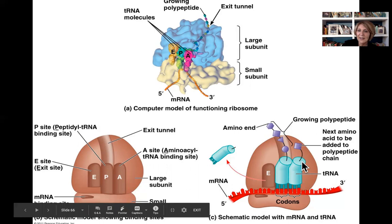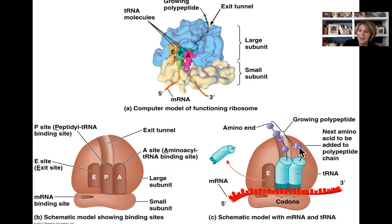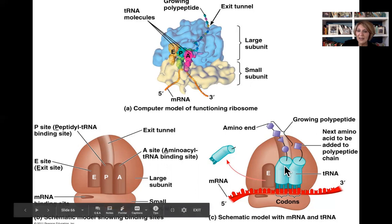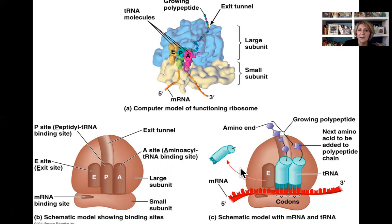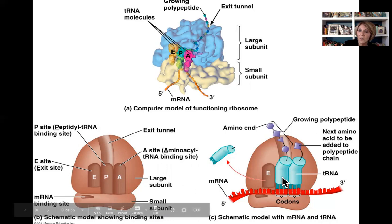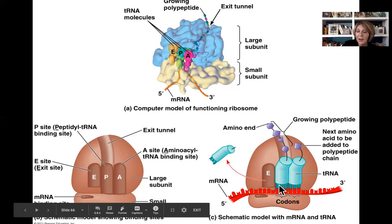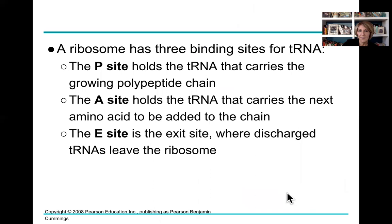With the tRNA molecules in place: the A site has the charged amino acid (the next one to be added); the P site is where the peptide bond forms between the new amino acid and the growing chain; the whole chain transfers to the first tRNA; the ribosome translocates one codon down the mRNA; the tRNA with the polypeptide chain moves to the P site; and the now-empty tRNA moves to the E site and exits. This is how the cell builds a very specific amino acid sequence from just the chemistry of tRNA, mRNA, and the ribosome.